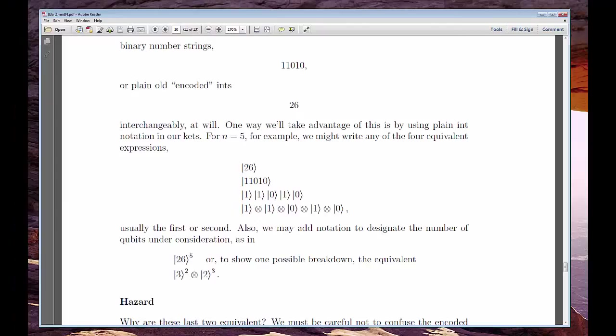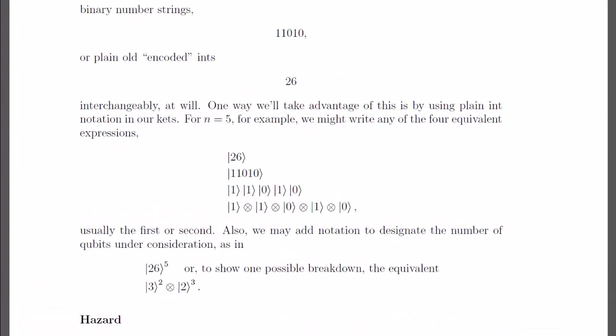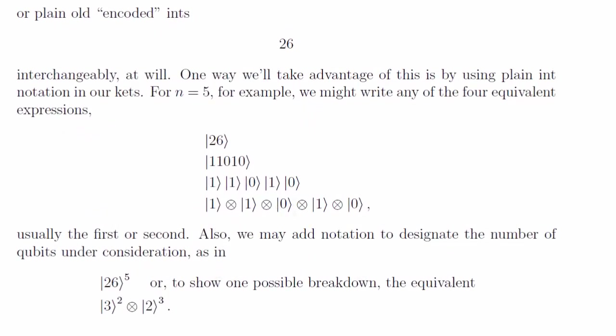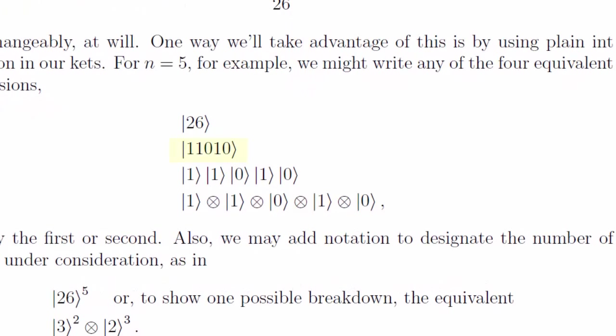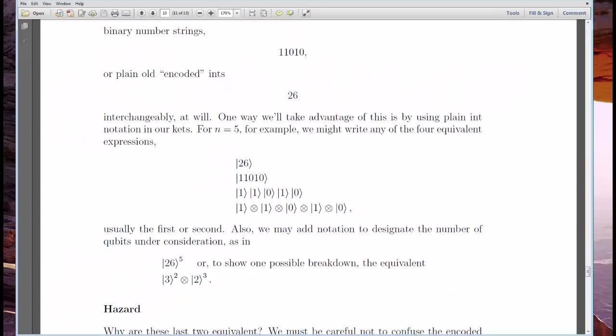The third and final environment we want to associate with the CBS kets of H_N is one we've actually seen. We've been calling it the encoded form of the CBS tensors. So instead of writing ket 11010, we might write ket 26, which is the decimal form of 11010.